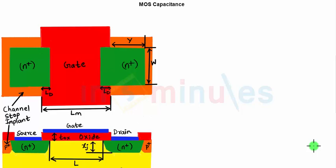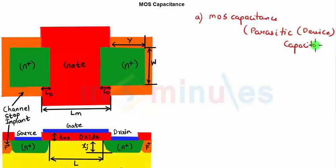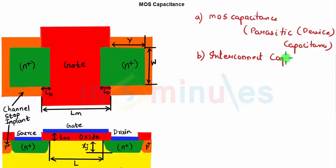There are going to be two types of capacitance present. One is the MOS capacitance, also known as parasitic or device capacitance — 'parasitic' means unwanted — and the other one is interconnect capacitance, which is the wired capacitance between two different MOSFETs when connections are made. In this clip we focus only on device parasitic capacitance.